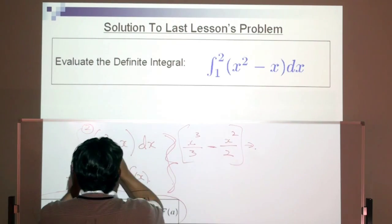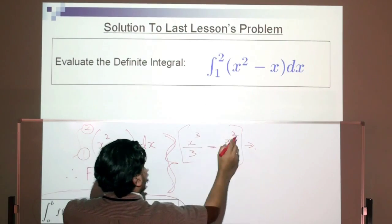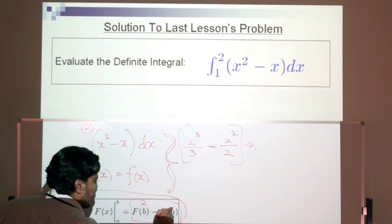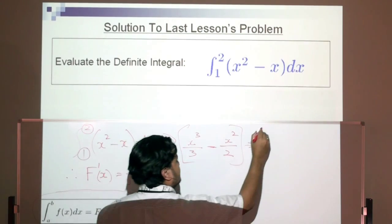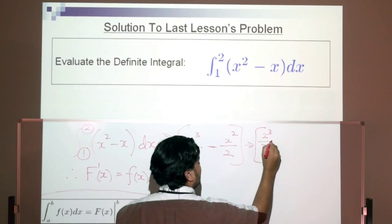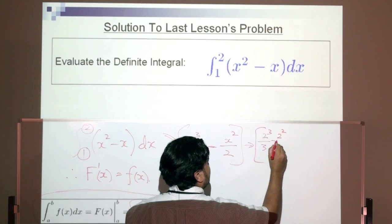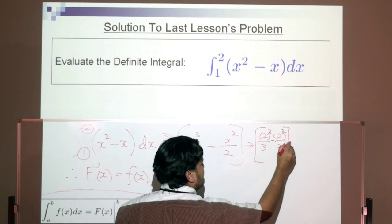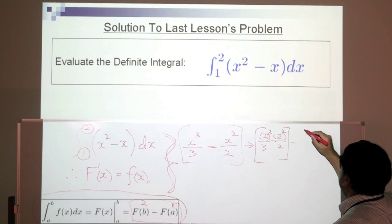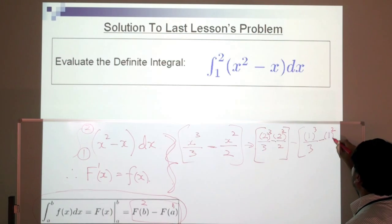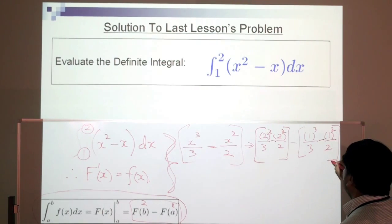What we do is substitute the upper limit of 2 and the lower limit of 1 into the antiderivative and subtract. So we get 2 cubed over 3 minus 2 squared over 2, minus the bracket with 1 cubed over 3 minus 1 squared over 2.